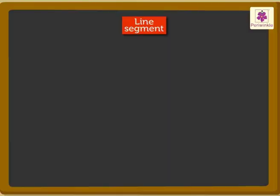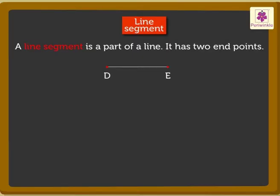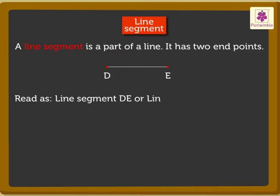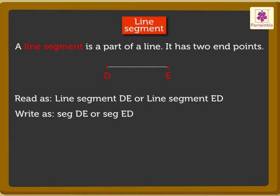Coming to line segment. A line segment is a part of a line. It has two endpoints. Look at this segment — it has two endpoints D and E. We read it as line segment DE or line segment ED. It is written as seg DE or seg ED, or with the symbol of the line segment over the letters.